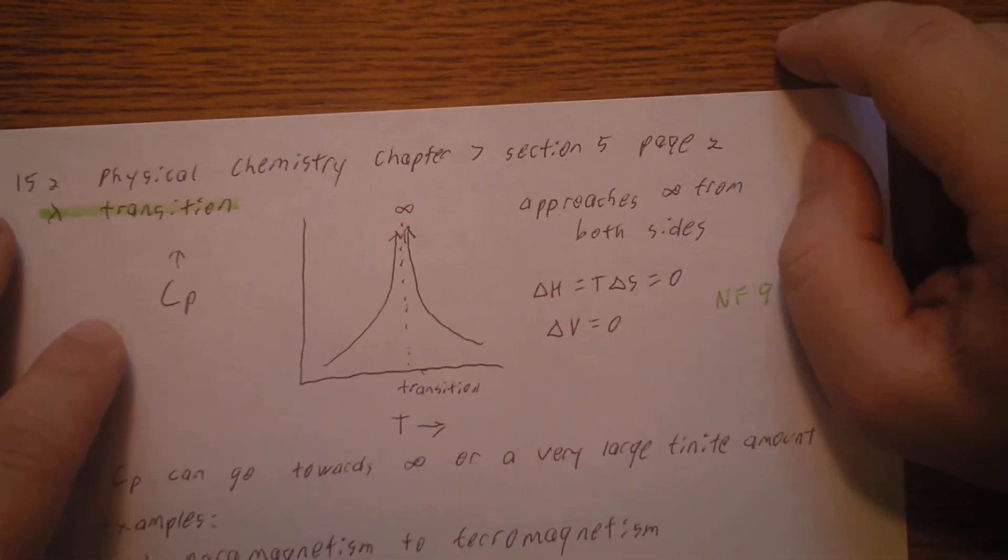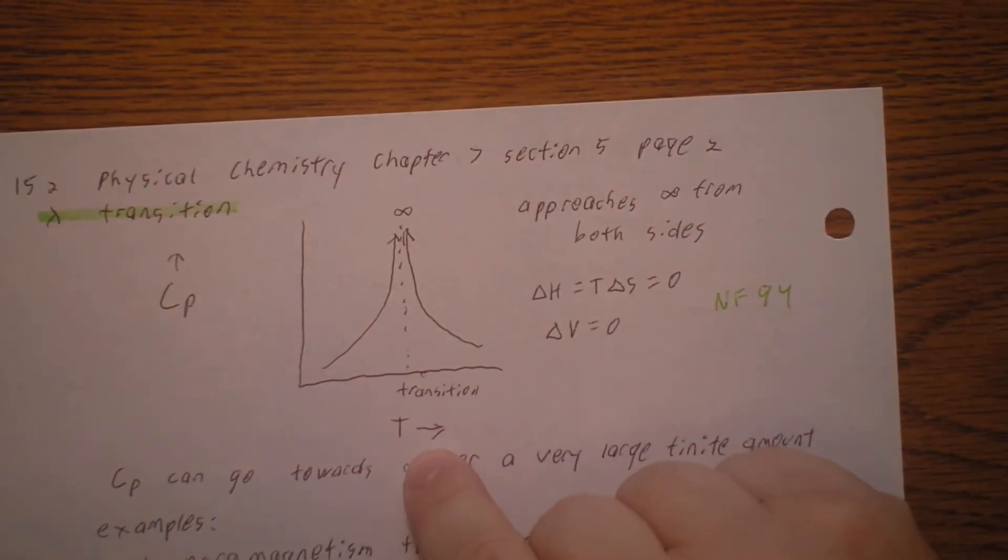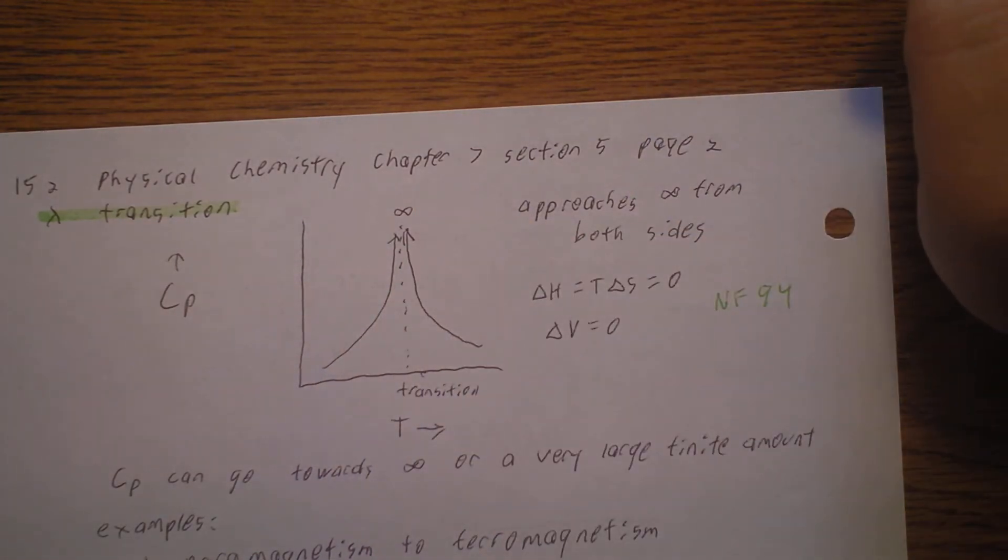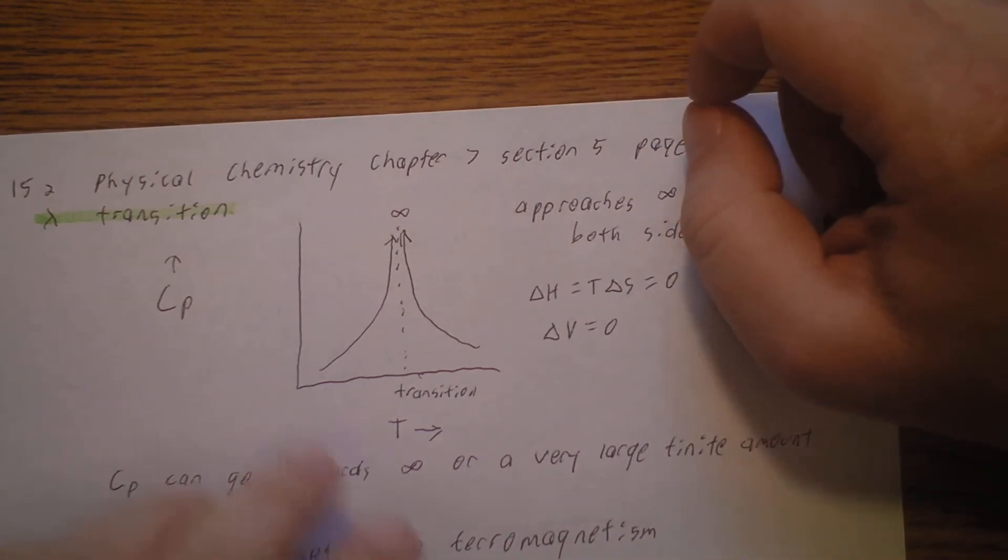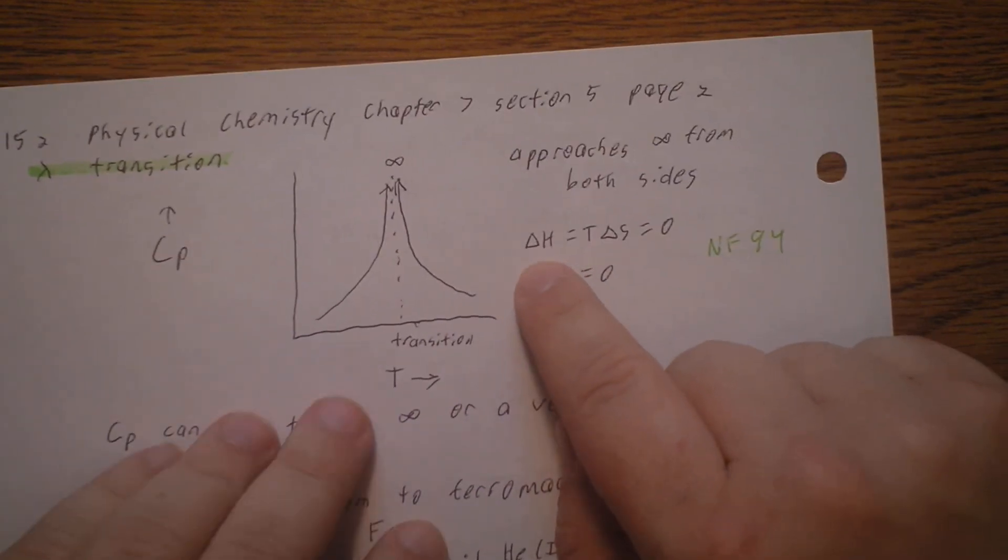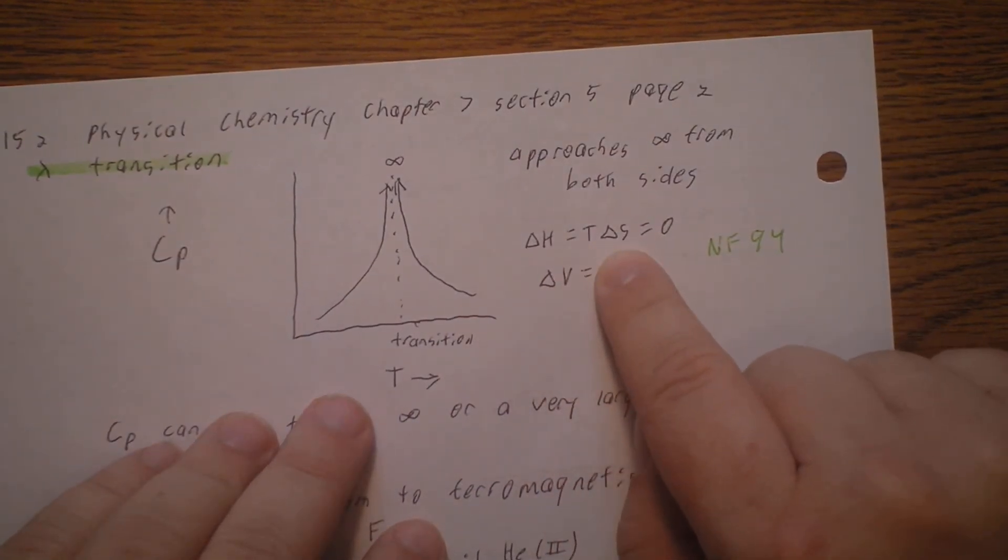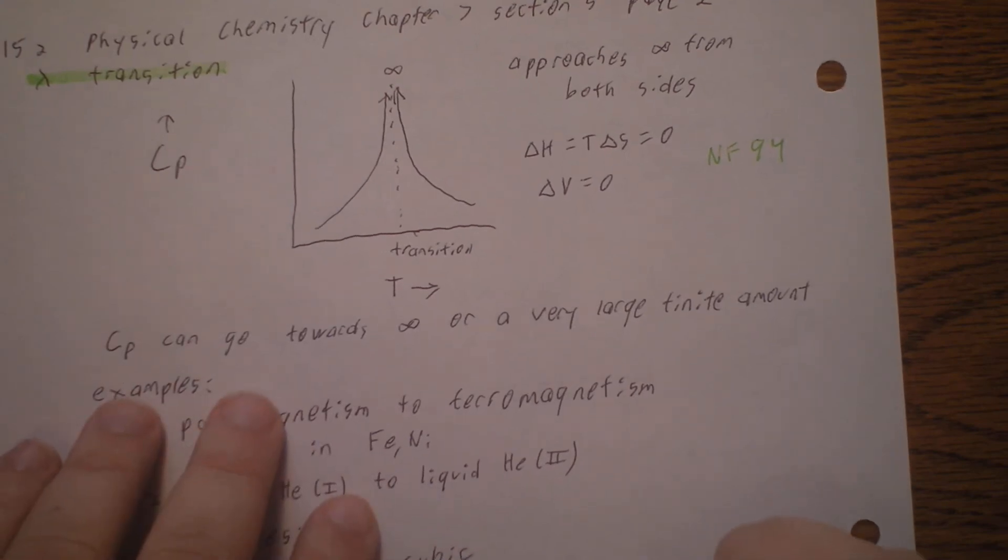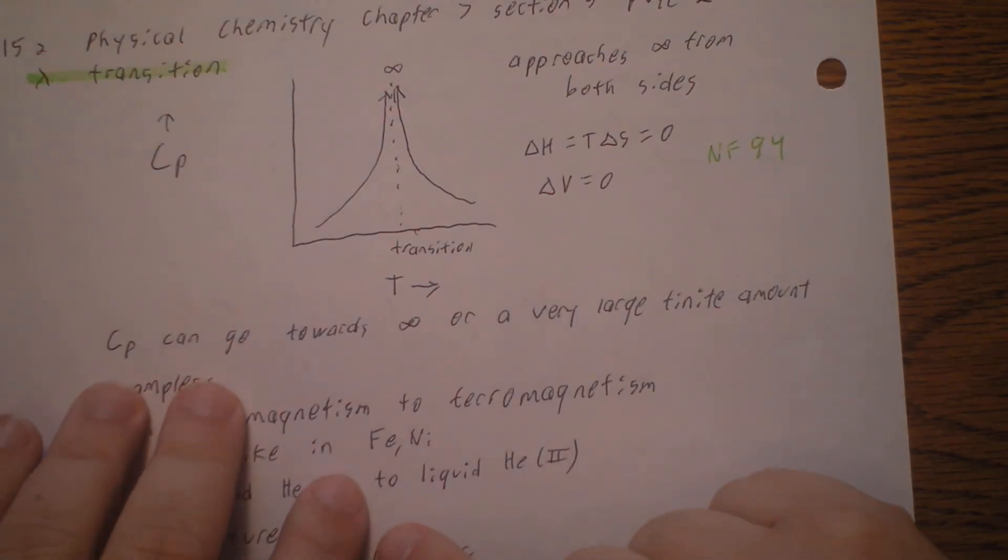Now let's talk about a lambda transition. Here's heat capacity versus temperature again. Notice we're coming up just like before, and it goes up to infinity from either side. That's why it's shaped kind of like a lambda, if you use your imagination. So a lambda transition, the heat capacity at constant pressure approaches infinity from both sides. The change in enthalpy is equal to temperature times the change in entropy, which is equal to zero. And the change in volume is equal to zero. Heat capacity can go towards infinity or just a very large finite amount.